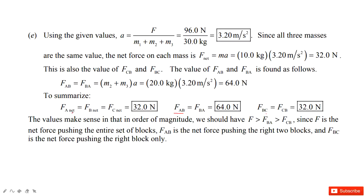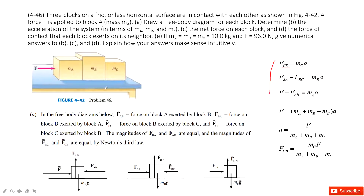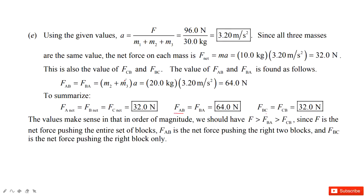You can see that the external force of 96 newtons is larger than force A to B, which is larger than force B to C. This makes sense because F is the net force pushing the entire system, while Fab only pushes B and C, and Fbc only pushes C. So F is larger than Fab, which is larger than Fbc — and they all produce the same acceleration. Thank you.